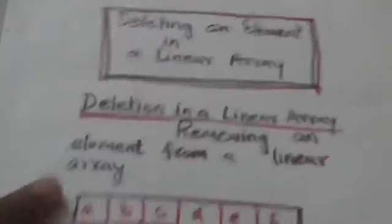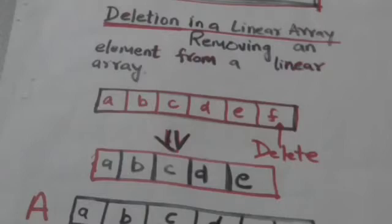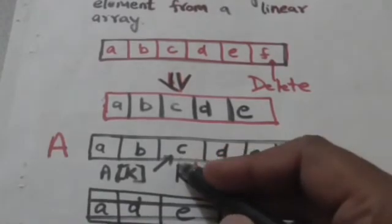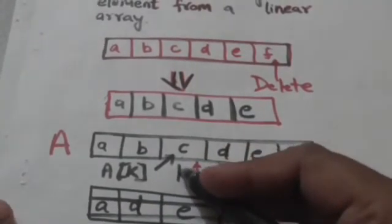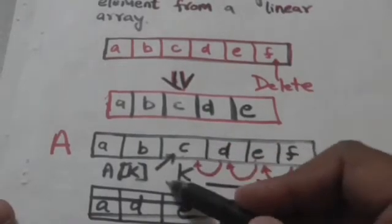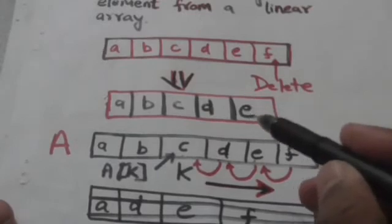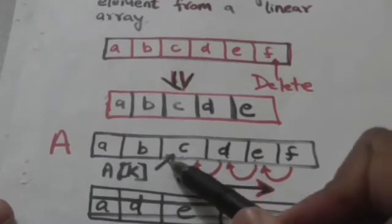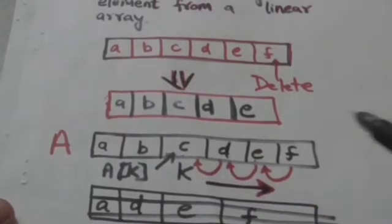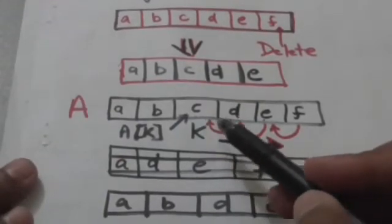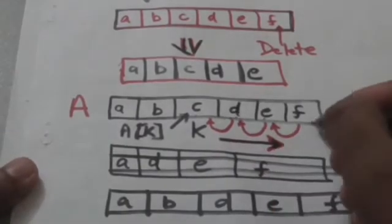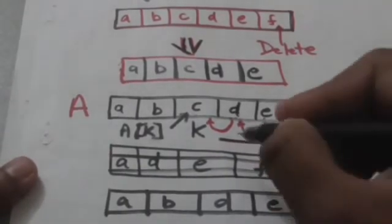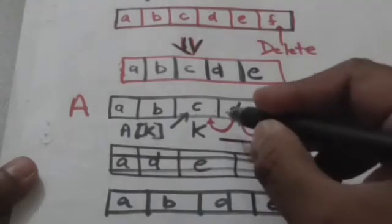Now suppose there is a linear array A, and we have to delete the element A[k] from linear array A, where k is less than the upper bound of linear array A. For this, all elements of A from index k+1 to upper bound will be shifted to the location of the previous lower index.